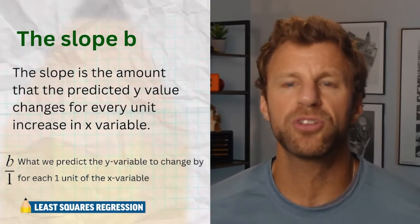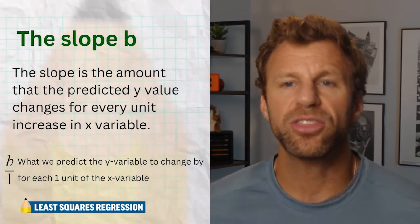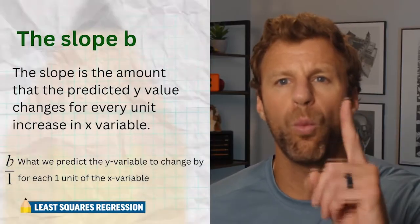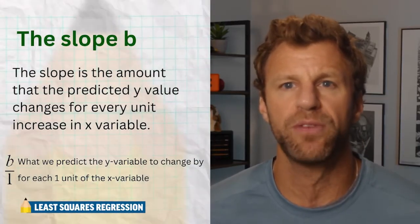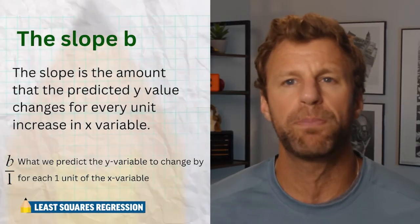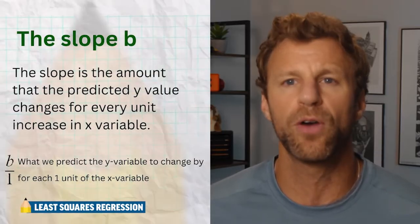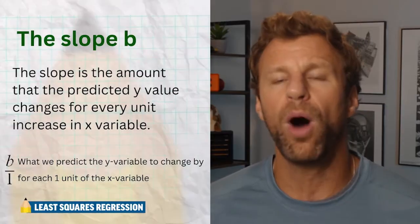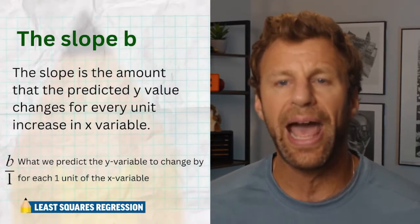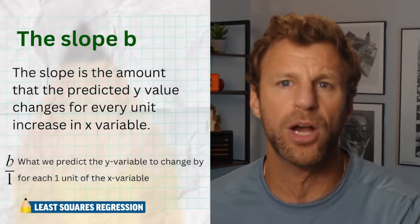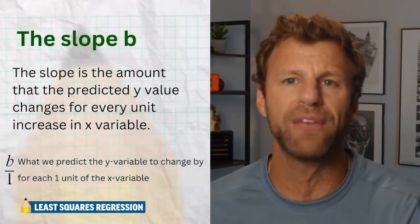Next up is the slope, the 'b' value. Proper interpretation of the slope hinges on understanding that the slope determines how much we predict the response variable to change for every increase of one unit of the explanatory variable. I like to look at the slope as a fraction — put it over one. The slope on top is the change in y, the one in the denominator is the change in x. So the slope tells us for every one increase of x, what we predict the change in y to be.